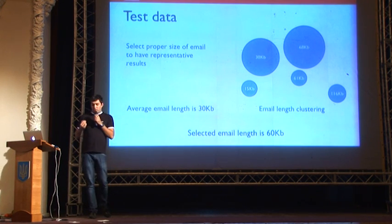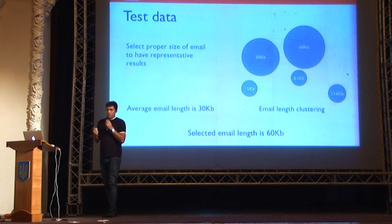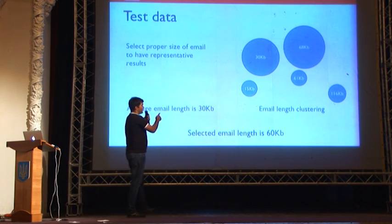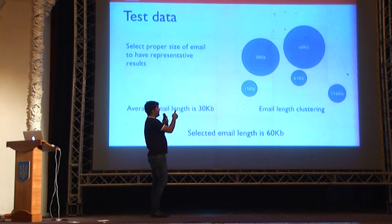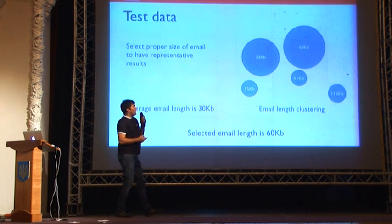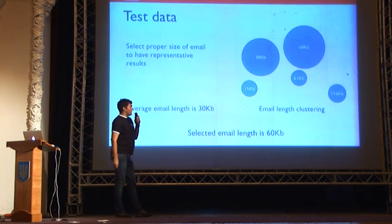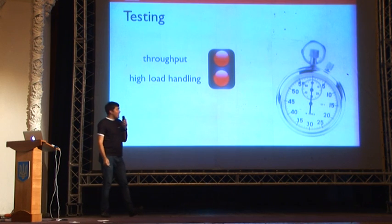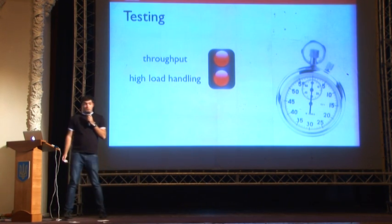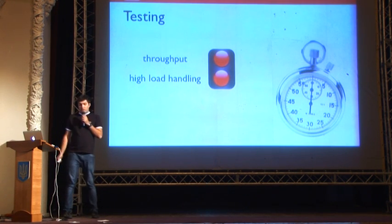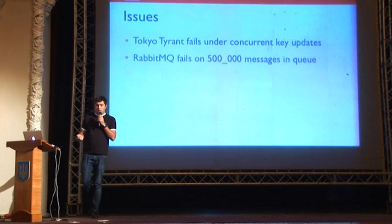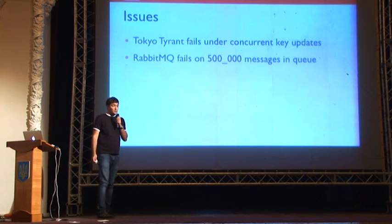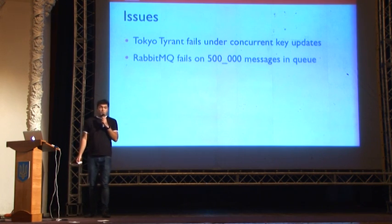The simplest approach is average email size — 30 kilobytes. But when we performed clustering of email sizes, the circle area representing frequency showed that 30KB and 60KB are the most frequent sizes in our system. So 30KB was not representative data. We selected 60KB data, ran our test suite, and failed — it didn't meet the required throughput. Tokyo Tyrant failed under concurrent key updates, and RabbitMQ failed when we put 500,000 messages in the queue.